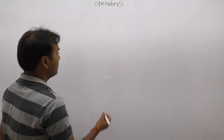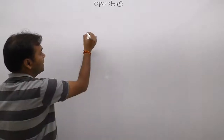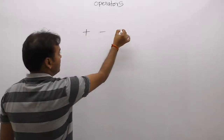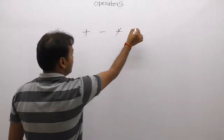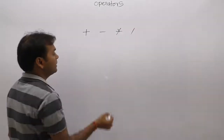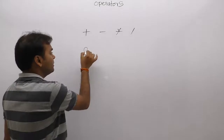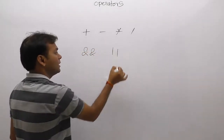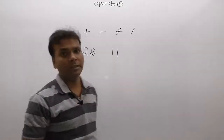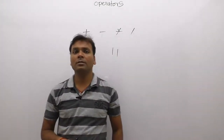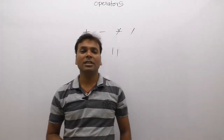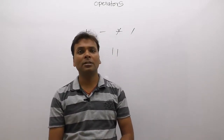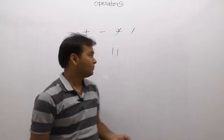Any type of arithmetic operation means addition, subtraction, multiplication, division, and so on. Same as logical operations — logical AND, logical OR — or bitwise operations, meaning bit-value operations, or relational operations like comparisons. All these types of operations can be performed using operators.